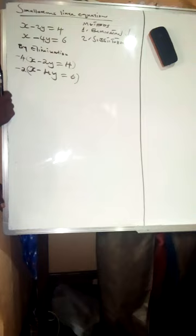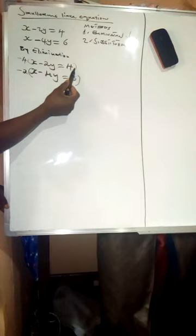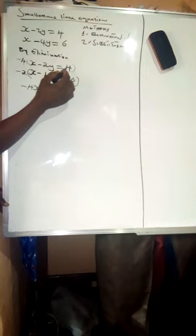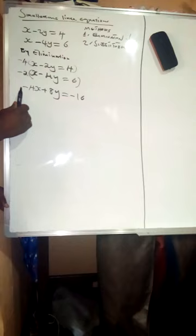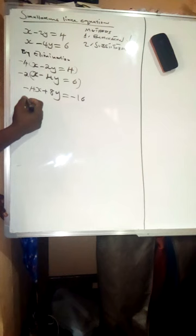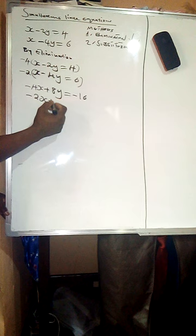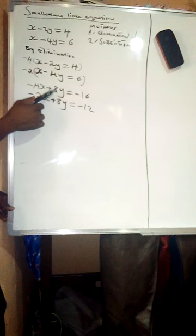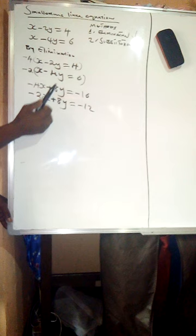Let's simplify. In the first case, negative 4 multiplies everything: negative 4 times x gives negative 4x, negative 4 times negative 2y gives positive 8y, and negative 4 times 4 gives negative 16. For the second equation, negative 2 multiplies everything: negative 2 times x gives negative 2x, negative 2 times 4y gives positive 8y, and negative 2 times 6 gives negative 12. The y coefficients are now the same.